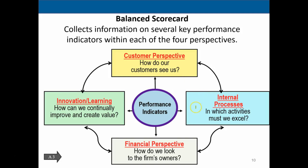Another perspective is internal process: in which activities must we excel? We need to decide where to concentrate — is it customer service, or quality products? What is the driving force we must be competitive in? Then there's the financial perspective: how do we look to the firm's owners? That's the one we traditionally think about through accounting. Finally, innovation and learning: how can we continually improve and create value? Every company must think about how technology and communication changes will affect them and how to take advantage of new changes going forward.